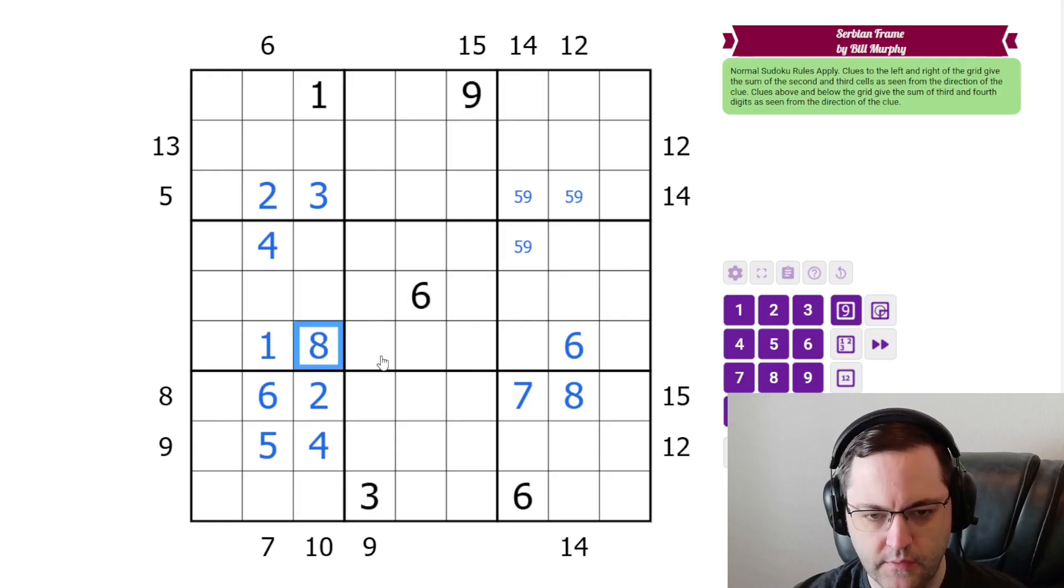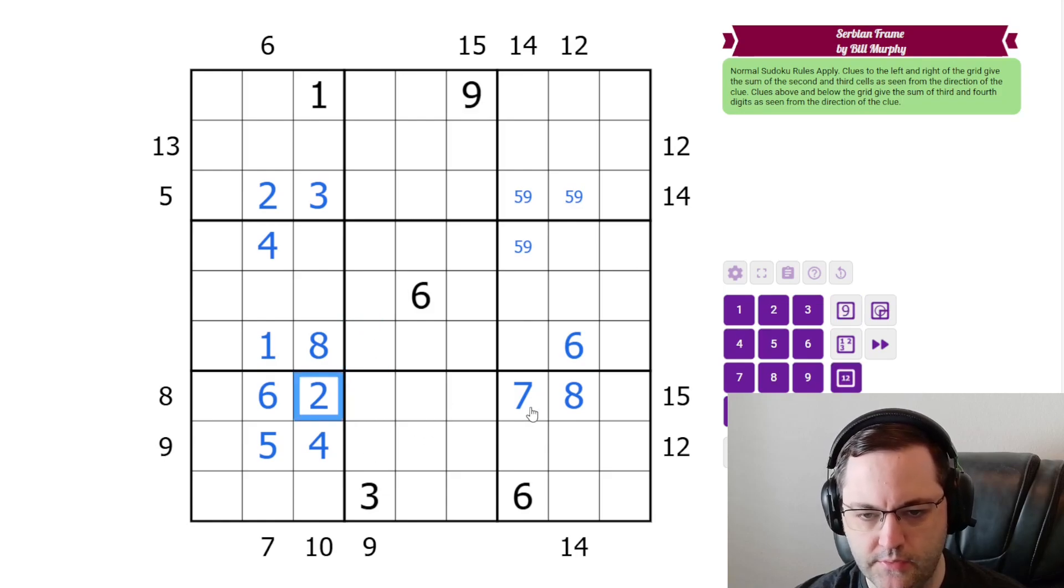The 10 here gives us an eight. The nine is actually resolved. It can't be two, seven because of the two, seven in the row. It can't be three, six because of the three. And it can't be one, eight because of the one, eight in this row. So that must be four, five.